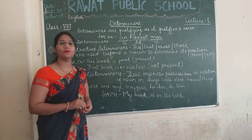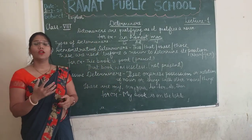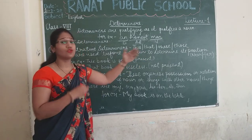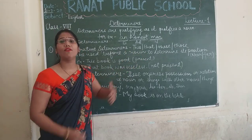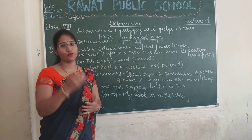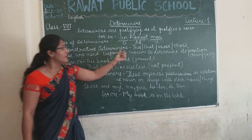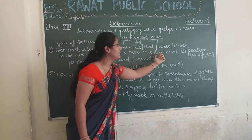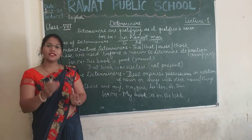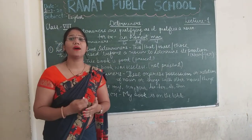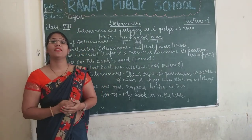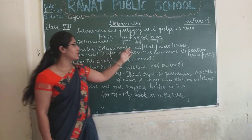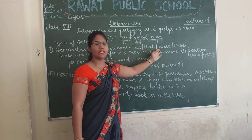Yeh hamesha noun se pahle use mein aate hain us ki position ko define karne ke liye — ki woh cheez, joh wo noun hai, woh near hai ya far hai, woh paas hoga ya door hoga. The basic difference is: 'this' and 'these' aata hai joh cheezein hummare paas hoti hain unke liye hum use karte hain — this and these.